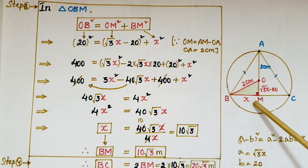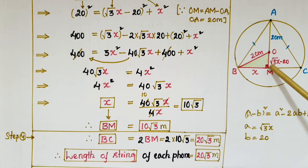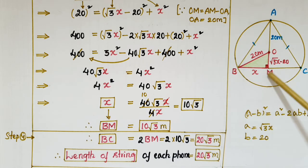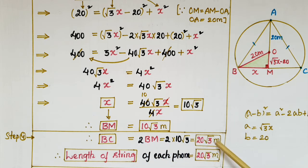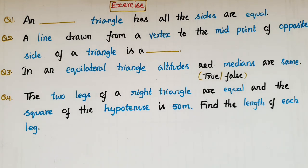Therefore BM = 10√3 meters. Since M is the midpoint of BC, the string length BC = 2 × BM = 2 × 10√3 = 20√3 meters. Therefore the length of the string of each phone is 20√3 meters.